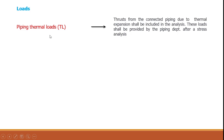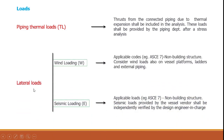Piping thermal loads are important for many critical vessels. These include thrust from connected piping due to thermal expansion, normally provided by the piping stress department. The criticality arises when piping is connected to the vessel at large heights, causing a very large overturning moment at the foundation base.